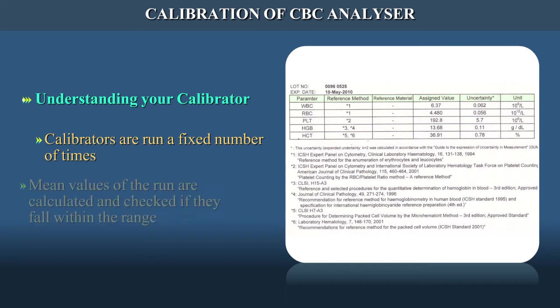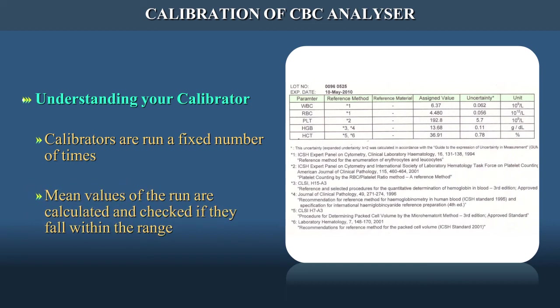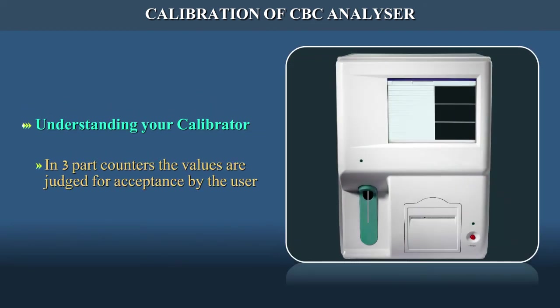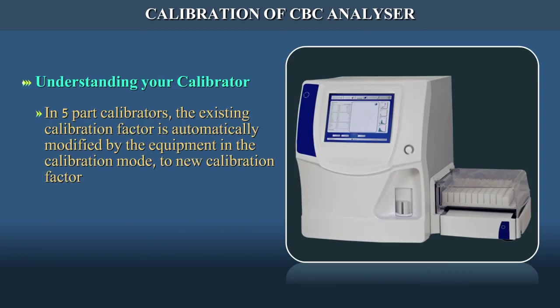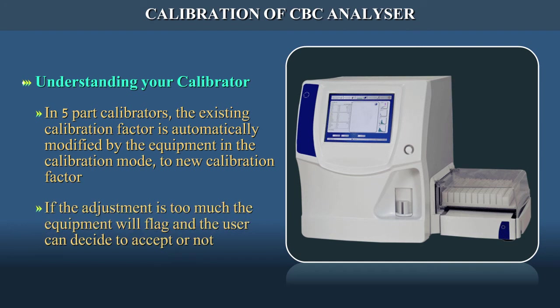The mean values of the runs are calculated and checked if they fall within the range. In 3-part counters, the values are judged for acceptance by the user. In the event of calibrators with a fixed value, as in 5-part calibrators, the existing calibration factor is automatically modified by the equipment in calibration mode to a new calibration factor so as to match the reference value. If the adjustment is too much, the equipment will flag and the user can decide to accept or not.